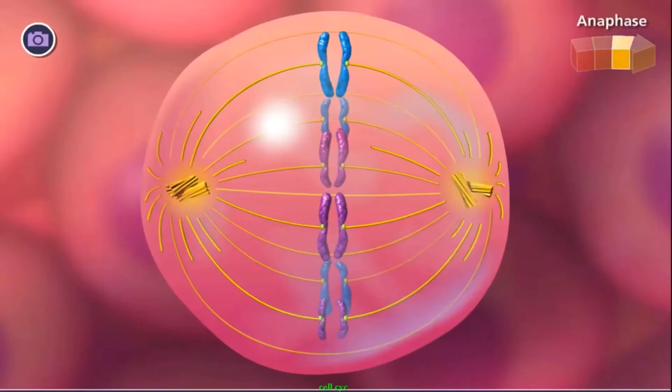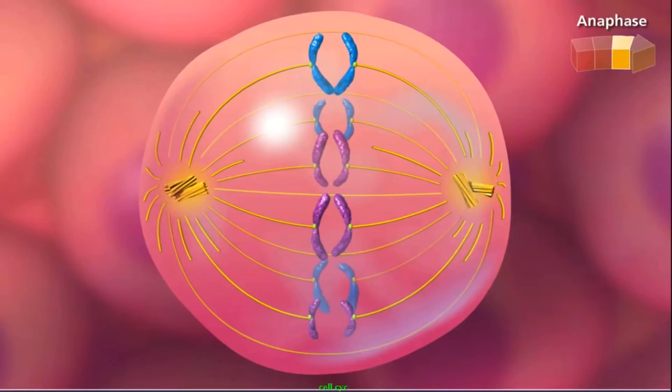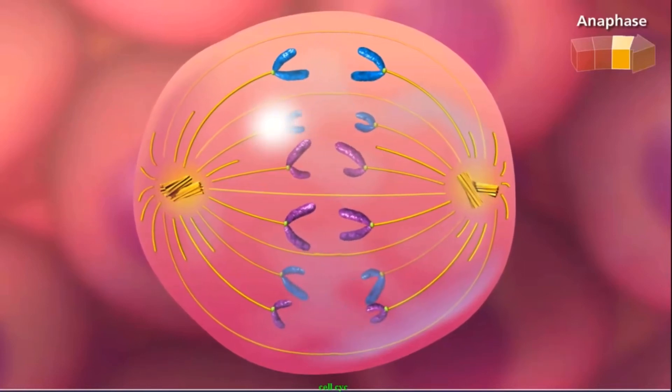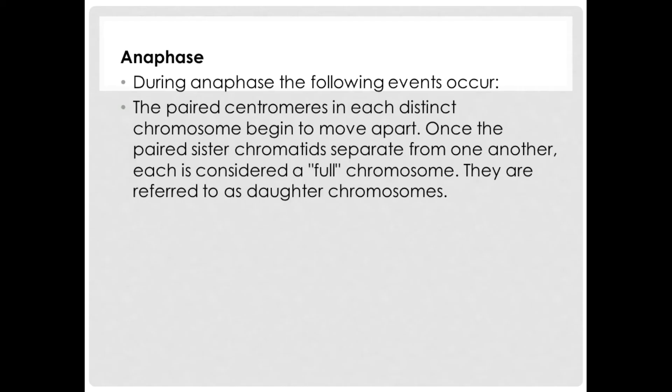Now let's take a look at anaphase. During anaphase the following events occur: The paired centromeres in each distinct chromosome begin to move apart. Once the paired sister chromatids separate from one another, each is considered a full chromosome. They are referred to as daughter chromosomes.